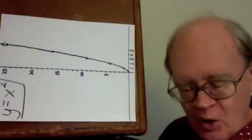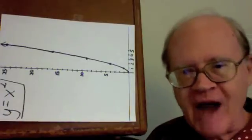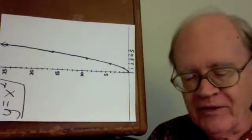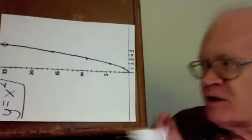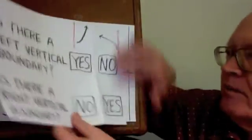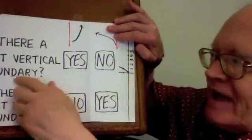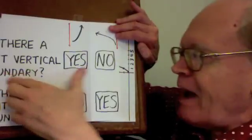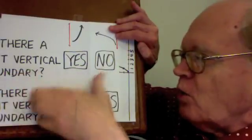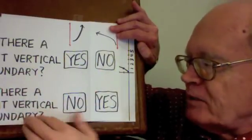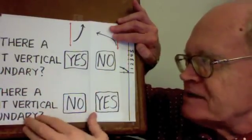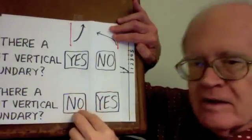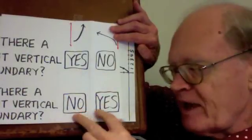The answers are the opposite of what they were when the graph was in its original position. Now the answers are: is there a left vertical boundary? No. Is there a right vertical boundary? Yes. The yes became a no, and the no became a yes.